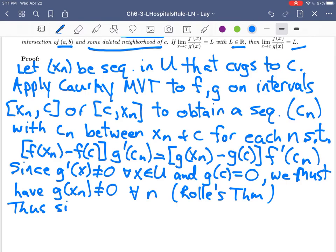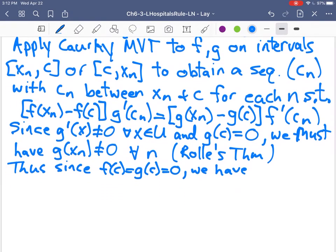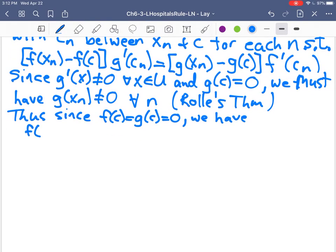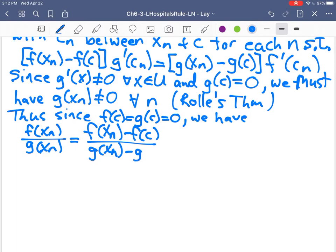Thus, since f(c) is equal to g(c) is equal to zero, we have f(x_n)/g(x_n) is equal to [f(x_n) - f(c)]/[g(x_n) - g(c)], which would just be f'(c_n)/g'(c_n), for every single choice of n.